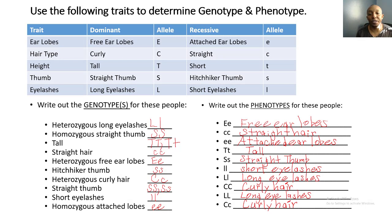Let's look at the last seven problems. Capital T and lowercase t — capital T is dominant, so this person is tall. Capital S and lowercase s — capital S is dominant, so this person has a straight thumb. Two lowercase l's — recessive — so they have short eyelashes. Capital L and lowercase l — capital L is dominant, so this person has long eyelashes. Two capital C's — curly hair. Two capital L's — long eyelashes. Capital C and lowercase c — capital C is dominant, so this person has curly hair.